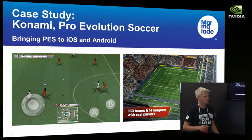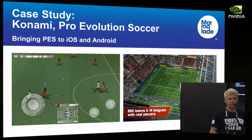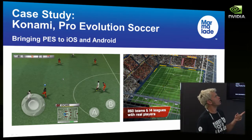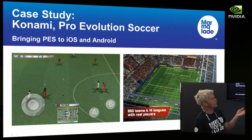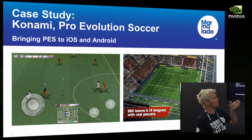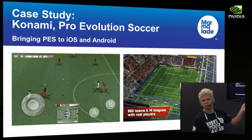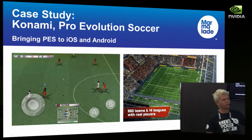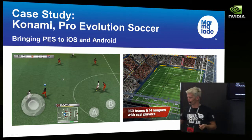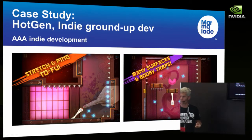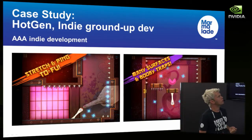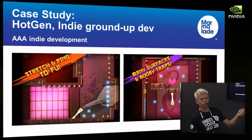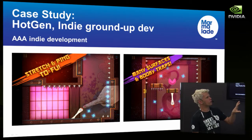A couple of examples of games ported using Marmalade: Konami brought Pro Evolution Soccer to iOS and Android, developing from scratch on Marmalade — they've done three iterations across multiple platforms. There's also an indie developer called Hot Gen who made Tofu and Tofu 2, a popular 2D casual game that was very successful on iPhone and is also available on Android and Playbook.